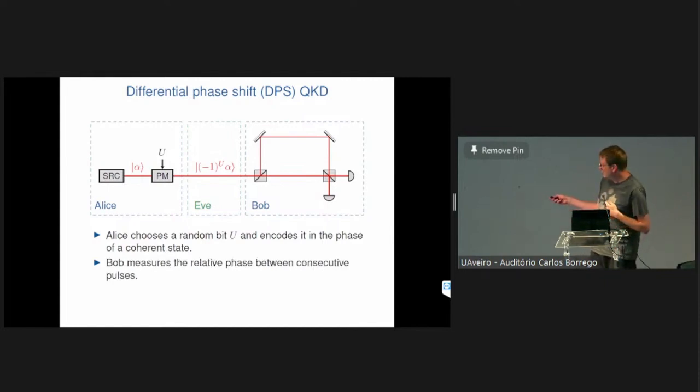And then this signal gets sent through Eve's channel and at some point arrives on Bob's side. And what Bob does with his interferometer here, this is the Mach-Zehnder interferometer, he measures the relative phase between two consecutive pulses. So to illustrate this, let's look at an example. So suppose that this bit U here was a 1, then Bob gets a negative phase for this round. And if, let's say, from the previous round, he got a coherent state with a positive phase, he interferes these two states with different phases. And depending on the relative phase between these two pulses, either this detector down here will click or this one up here. And so he is able to reconstruct the relative phases between the different pulses and they can then use this as a shared key.